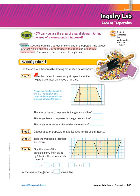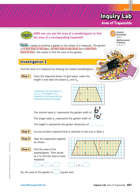In Investigation 1 it says trace — you're not going to actually trace this on grid paper, so just stick with me and hopefully you'll see how trapezoids are connected to parallelograms. Find the area of the trapezoid by drawing a related parallelogram. Trace the trapezoid below on grid paper and label the height h and the bases b1 and b2. Here's base one, here's base two, and the height is the distance between them. The shorter base b1 represents the garden width of six feet, the longer base b2 represents ten feet, and the height h represents five feet from front to back.